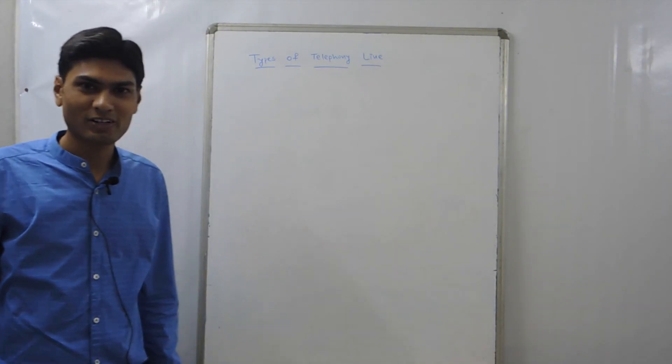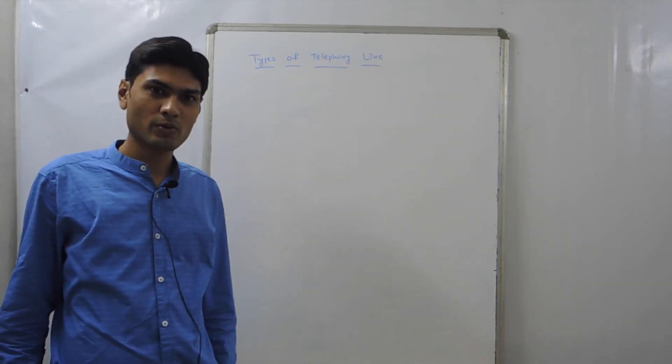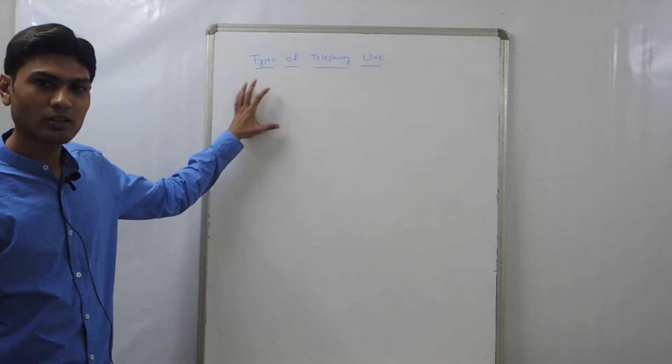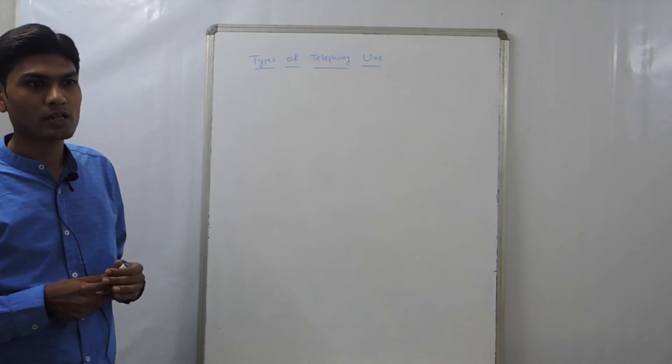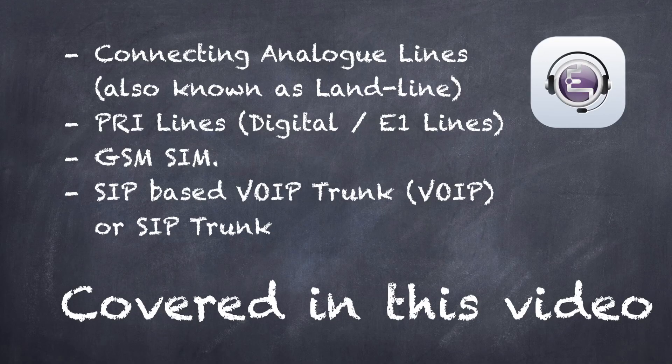Hello friends, this is Vishal Patel and in this video we are going to look at the types of telephone lines. There are normally four types of telephone lines. One is the analog line which we call PSTN line, public switch telephone network.